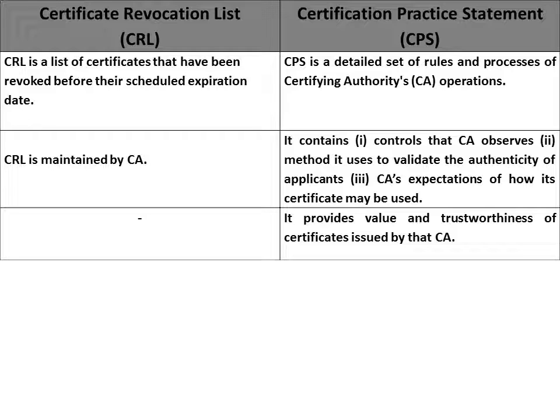Now let us differentiate between CRL and CPS. CRL is a list of certificates that have been revoked before their scheduled expiry date. On the other hand, CPS is a detailed set of rules and processes of the certifying authority's operation. CRL is maintained by CA, and CPS contains controls that CA observes, the method it uses to validate the authenticity of applicants, and CA's expectation of how its certificates may be used.